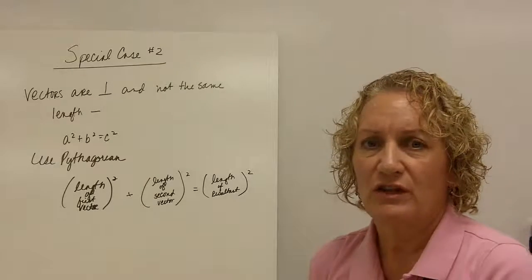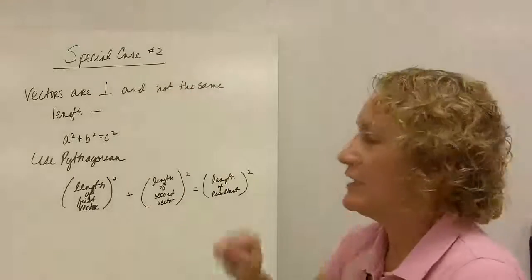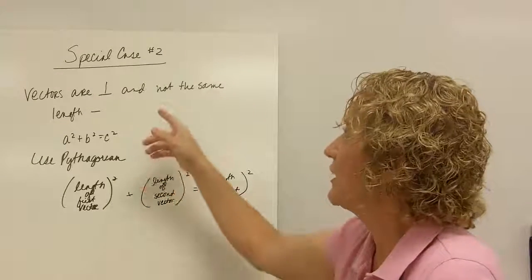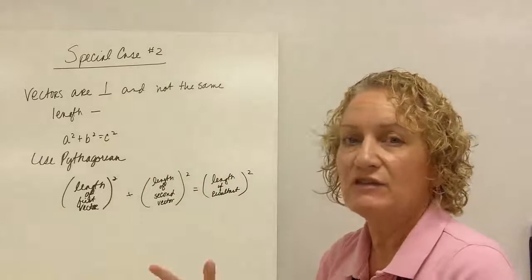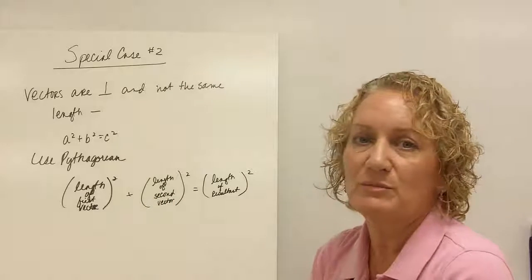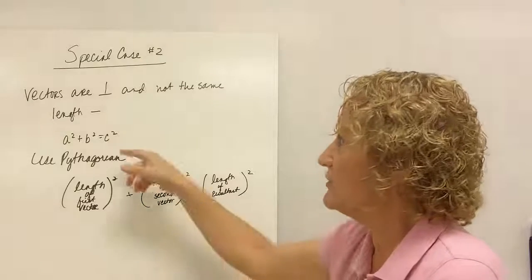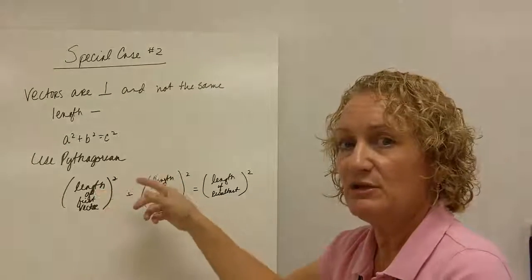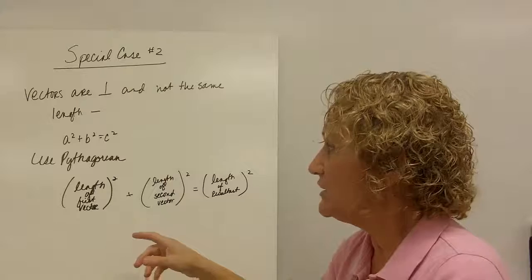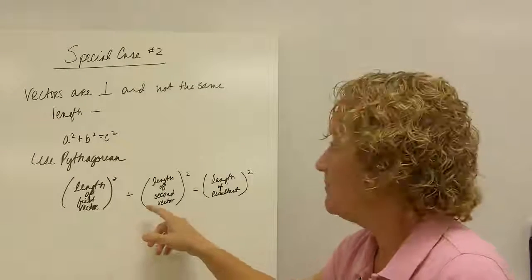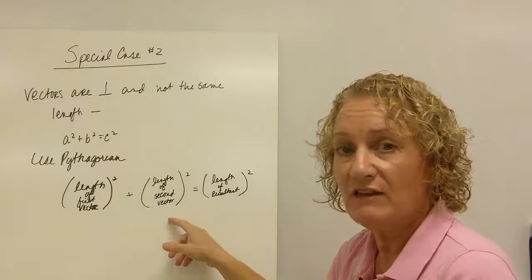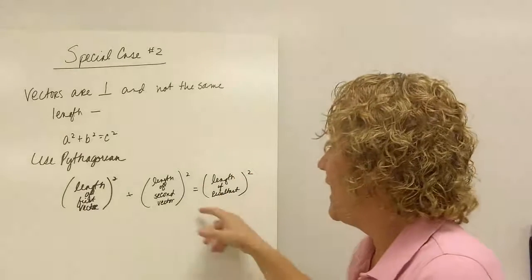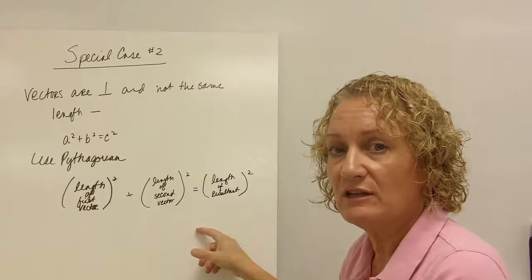So the second special case that you can use, I call it special case number 2, is when vectors are perpendicular, so they are at 90 degrees to one another, but they're not the same length. If they're the same length, you can use the square rule, which is special case number 1. But they don't have the same length. So what do you do? Well you use the Pythagorean theorem, which is a squared plus b squared equals c squared. But in physics terms, it's the length of the first vector squared, plus the length of the second vector squared. Add those together, and whatever your answer is, take the square root of that. And that tells you the length of the resultant.